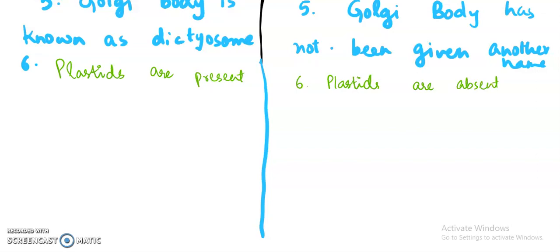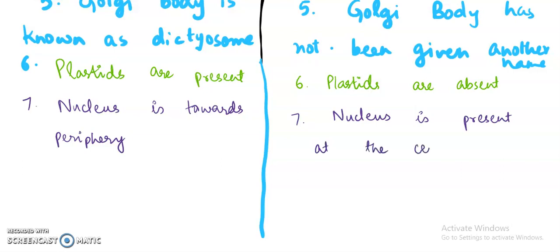Next difference in the case of plant cell will be nucleus is towards periphery. Periphery means boundary. And here in the case of animal cell nucleus is present at the center of the cell.